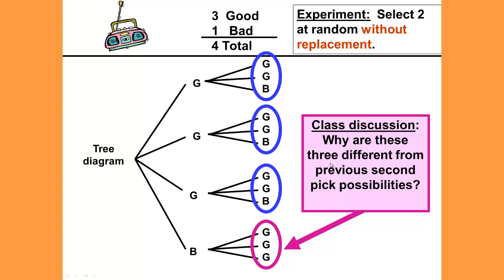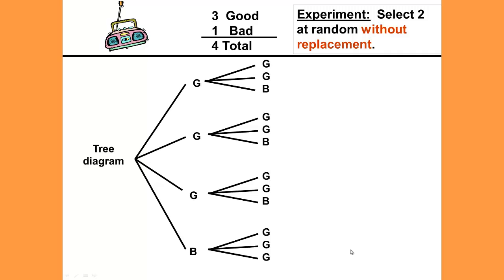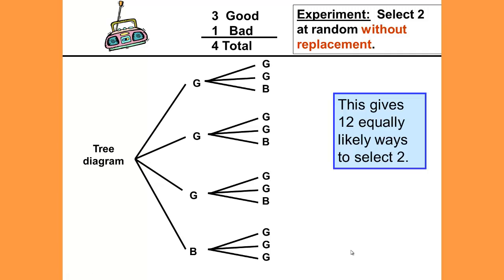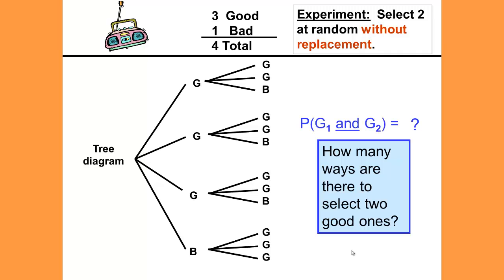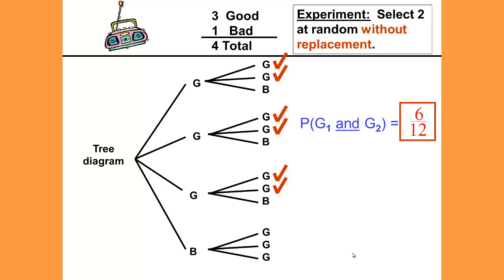The second choices are different because by holding a radio out of our sample space and not replacing it, we change the sample space — the choices are not only different from the previous example but can be different from each other. This gives us 12 equally likely ways to select two radios. Notice we have fewer ways to do this. How many ways are there to select two good ones? That gives us 6 out of 12, and for a step later in this video I will not simplify this fraction.